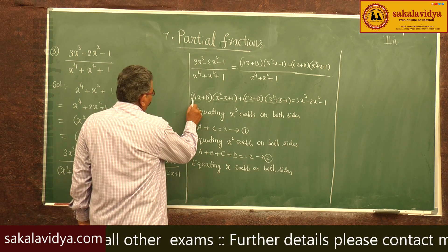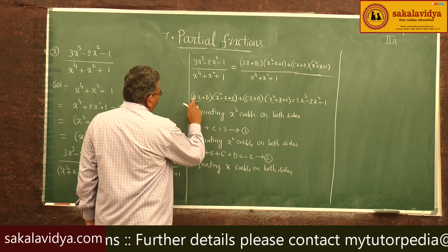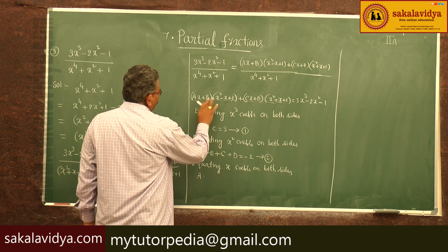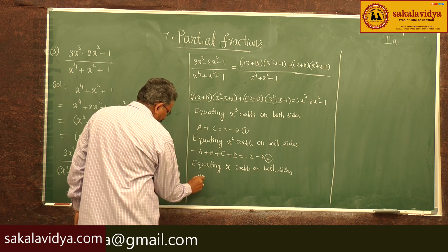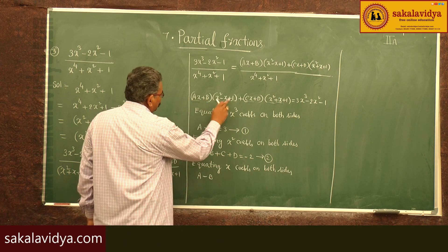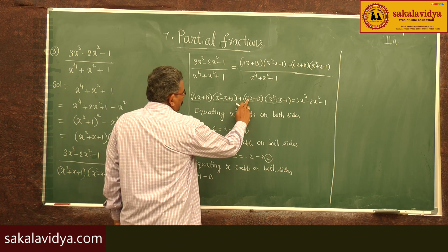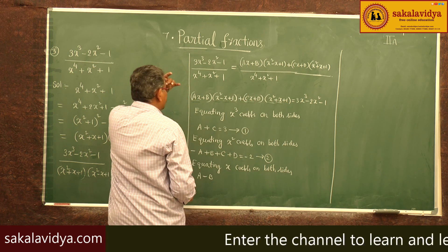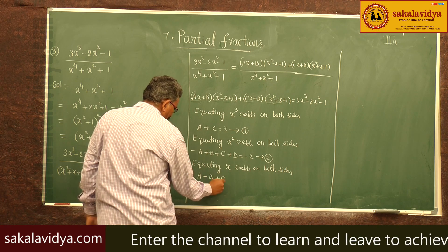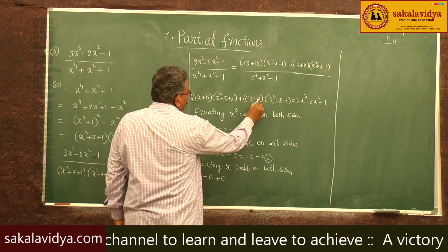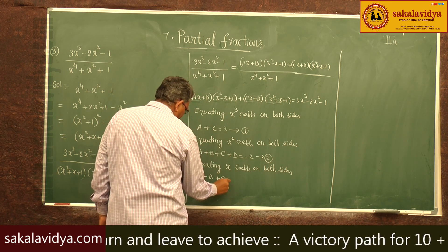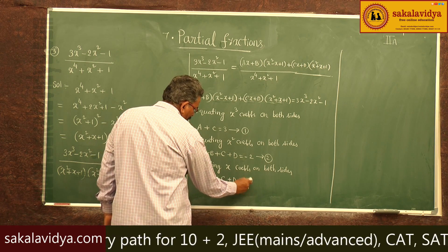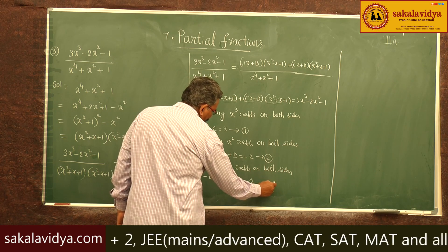Equating x coefficients on both sides: ax·1 gives ax, b·(-x) gives -bx, cx·1 gives cx, and d·x gives dx. There is no x term on the right side, so a - b + c + d = 0 — equation 3.